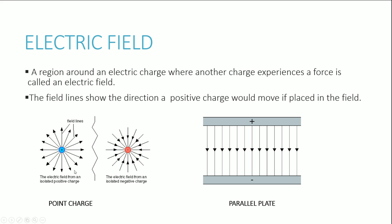First, we're going to look at point charges — a charge at a single point. If you have a positive point charge, you have electric field lines radiating outwards, because the field lines go in the direction a positive charge would move if placed in the field. An isolated positive charge has field lines radiating outward. In comparison, a negative point charge has field lines going towards it, because a positive charge placed nearby would be attracted inward. So memorize these two: positive charge — field lines radiate out; negative charge — field lines radiate inwards.